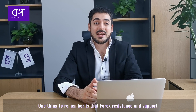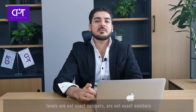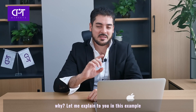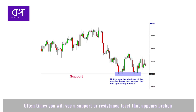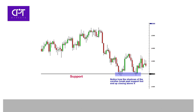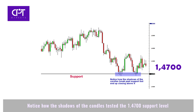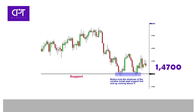One thing to remember is that Forex resistance and support levels are not exact numbers. With candlestick charts, these tests of support and resistance are usually represented by the candlestick shadows. Notice how the shadows of the candles test the 1.4700 support level. At those times it seemed like the market was breaking support, but in hindsight we can see that the market was merely testing that level.